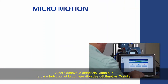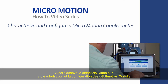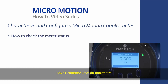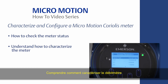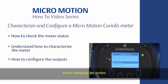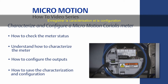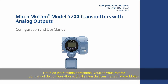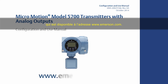This concludes the how-to video of Coriolis meter characterization and configuration. In summary, using ProLink software you should now know how to check the meter status, understand how to characterize the meter, know how to configure the outputs, and know how to save the characterization and configuration. For the complete set of configuration instructions, please refer to the MicroMotion Transmitter Configuration and Use Manual, which can be found at www.emerson.com.